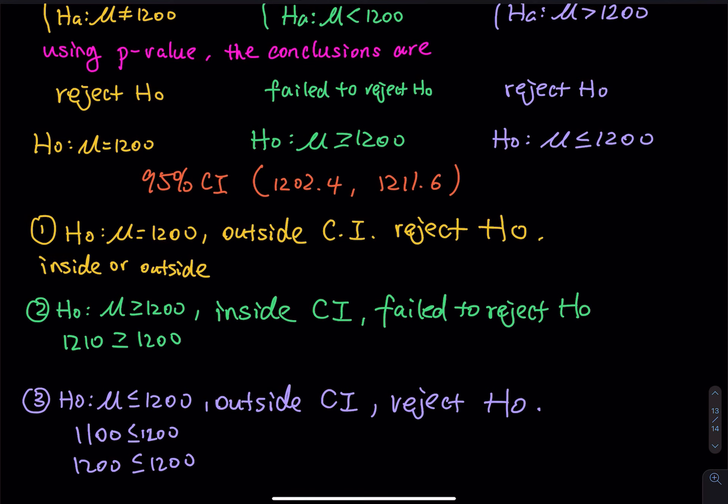It is just that easy. From now on, you give me H0, HA, and an alpha — I can construct a confidence interval to answer your question. I don't need to do any z-test, t-test, calculate the z, sketch a picture, or calculate the p-value. As long as I know confidence interval, I can do hypothesis test without performing any procedures in the hypothesis test.